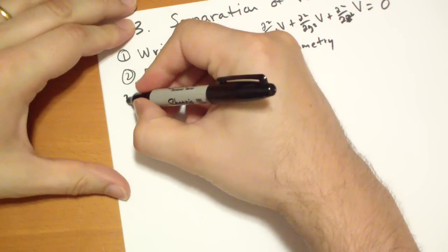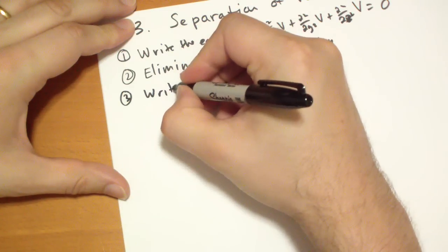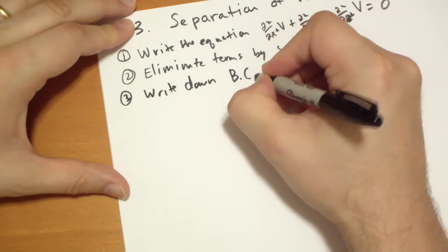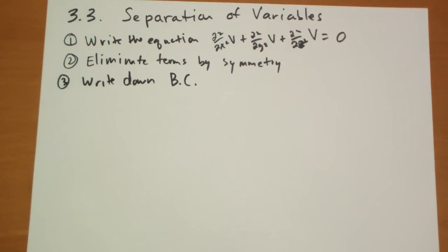The next thing you do is write down those boundary conditions. You write them down because you're going to have to refer to them again and again, so you want to make sure you get it right.